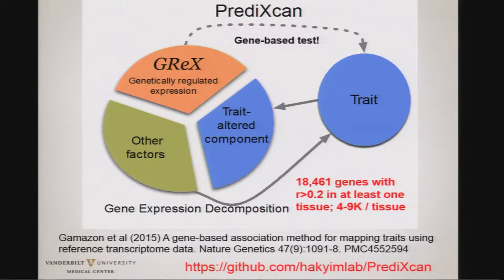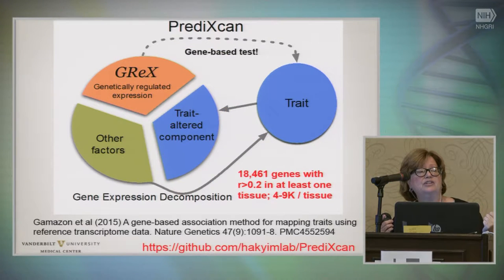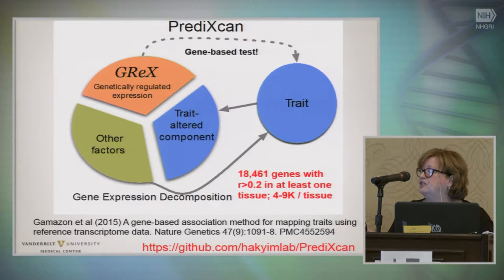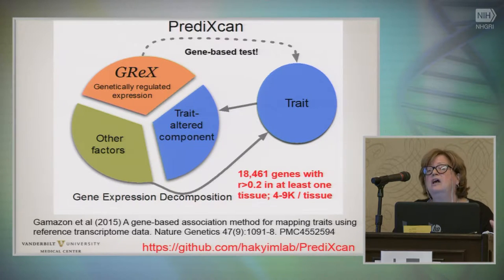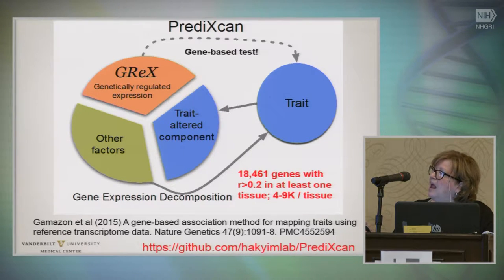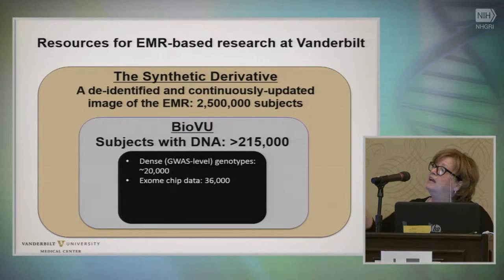For many genes expressed in multiple tissues, you tend to get the best quality predictor in tissues where you have the largest numbers of individuals measured. Some genes are expressed in a single tissue, and unless you have a quality predictor built in that tissue, we can't really assay that gene. But today we can assay more than 18,000 genes with good predictive ability, and we're applying this broadly in BioVU.